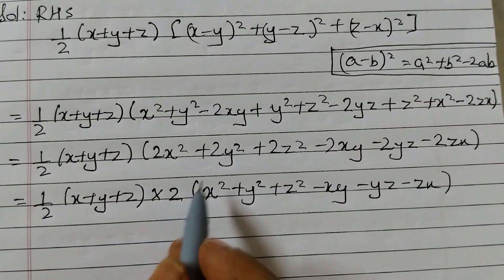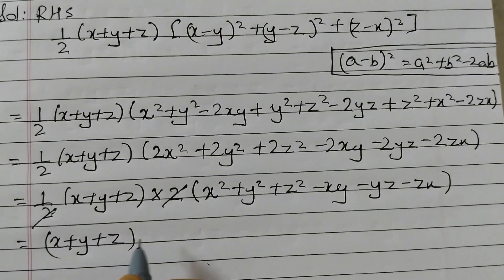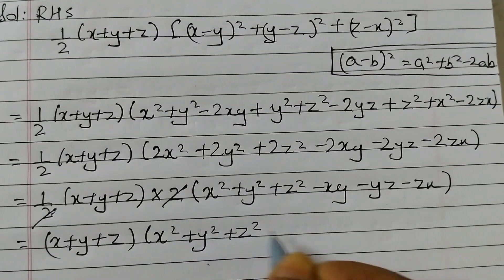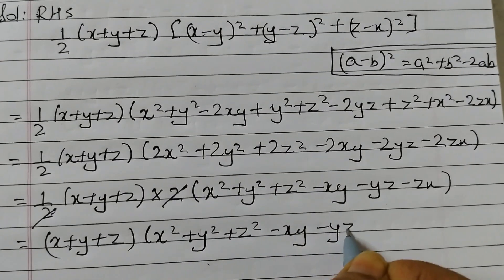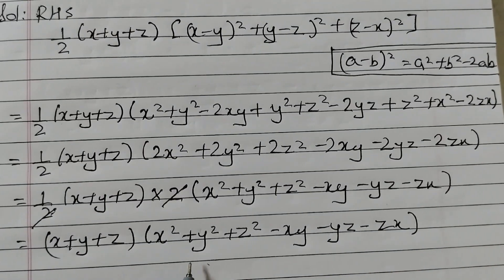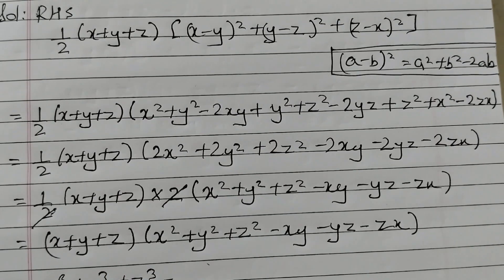Now here there is a 2 in the numerator and a 2 in the denominator, so they cancel out. What is left is x plus y plus z into x squared plus y squared plus z squared minus xy minus yz minus zx. And this is the identity given in your textbook as identity 8, so this equals x cubed plus y cubed plus z cubed minus 3xyz.